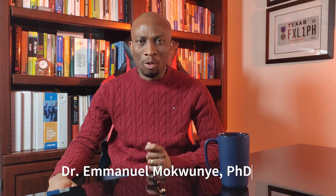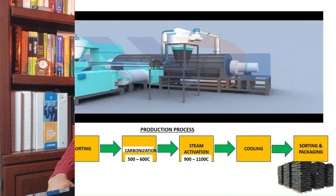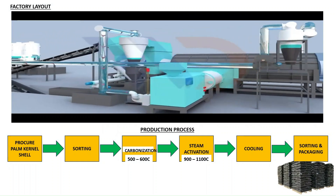Hi there, I'm Dr. Emmanuel Mokone and you're welcome to another episode of Consumption to Production, Nigeria. Today we'll be talking about the production of activated carbon, and the required raw material is palm kernel shell.